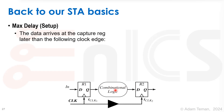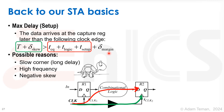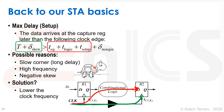Max delay is a setup problem — data arrives at the capture register later than the following clock edge. We have a launch register, combinational logic, and a capture register. With clock skew between launch and capture, the clock period T plus positive skew must be larger than the register's Tcq plus logic delay plus setup time plus margins for on-chip variation. Possible causes of a setup violation: slow corner, too high a frequency, or negative skew. The solution is lowering the clock frequency — but that's not our issue with UART.